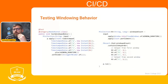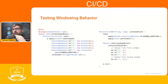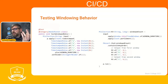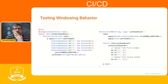The example we saw was for a batch pipeline. A similar approach applies to streaming pipelines. When you test a streaming pipeline, you have to keep in mind that the input data needs a timestamp. To create data elements with a timestamp you can use the Create transform, as you can see in the snippet in the slide.